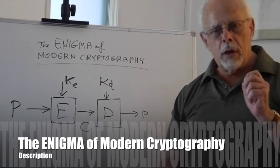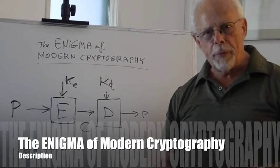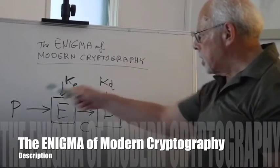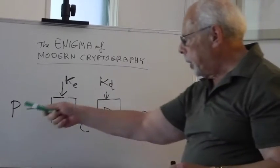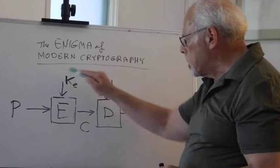The enigma of modern cryptography. For hundreds of years, this was the configuration of cryptography: plaintext encrypted with an encryption key, producing a ciphertext.